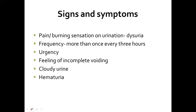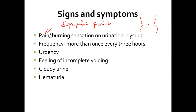With cystitis, you'll have pain, but this pain is a bit different. If you remember the pain with pyelonephritis, we have flank pain. But with cystitis, the pain you'll have is a suprapubic pain, because the bladder is located just below the navel region, around the pelvis. So suprapubic pain is one way you can differentiate whether you're having pyelonephritis or cystitis.